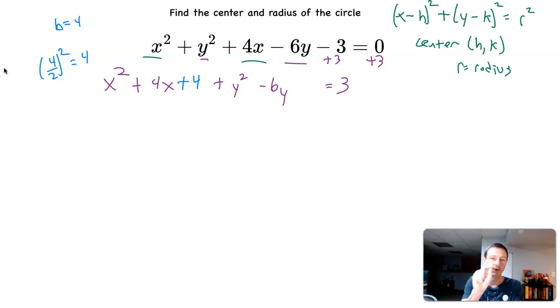And since I'm adding on a 4 there, I have to offset that with adding a 4 over here also. What I do to one side, I have to do to the other.